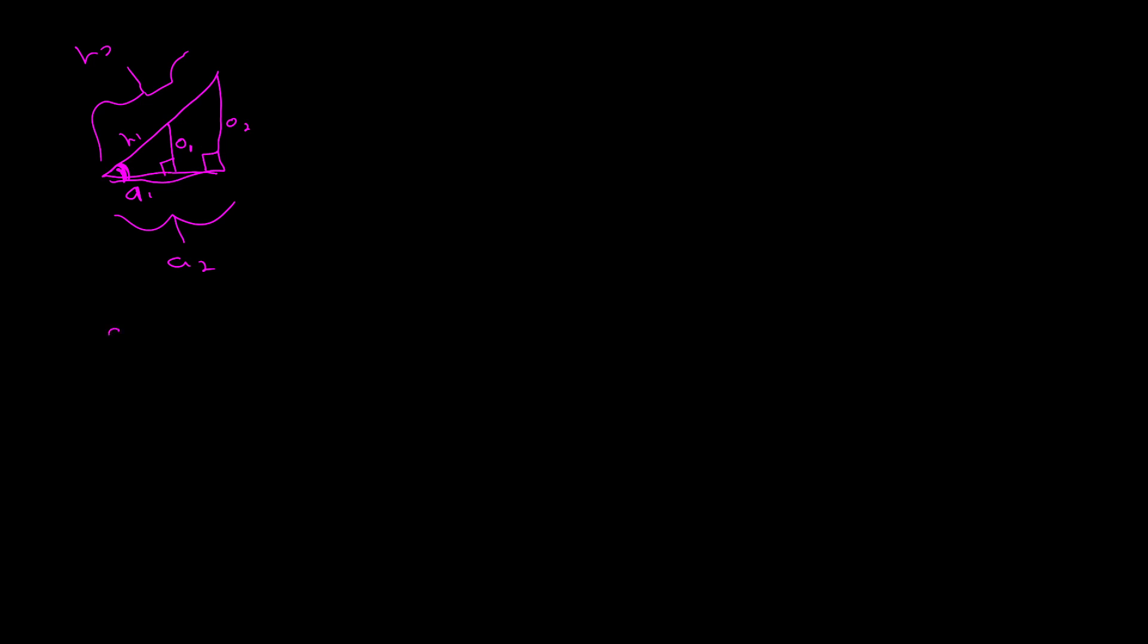And so they talked about the sine of an angle being the ratio of the opposite side over the hypotenuse. And if that angle was the same, this ratio would always be the same. And the cosine of an angle was the adjacent side to the hypotenuse. And the tangent of the angle was the opposite over adjacent.